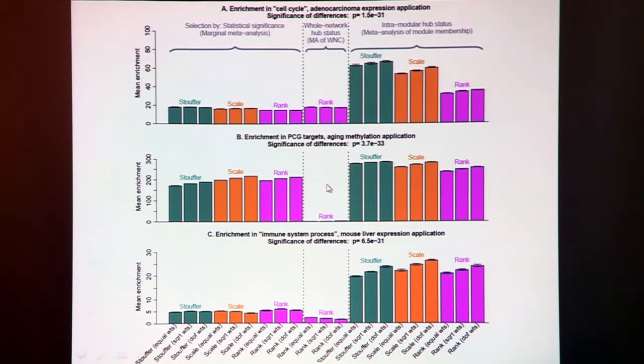The one thing you want to focus on here is look at the whole network hubs in the middle. Do you remember how I kept telling you look, whole network hubs are often utterly uninteresting? Here are the data. Whenever you select genes as whole network hubs you learn very little if any. It's the wrong strategy.